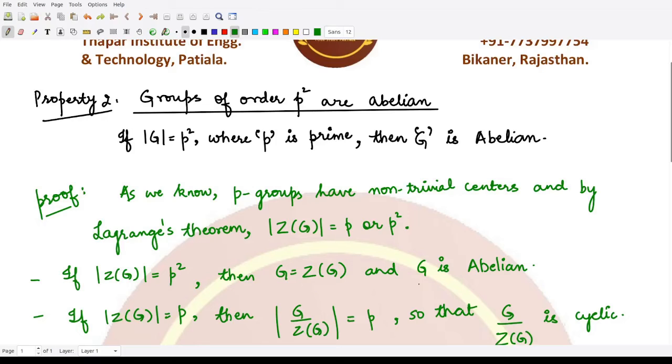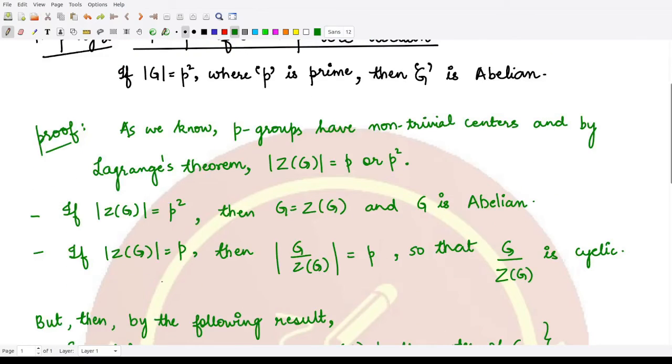In the second case, if we suppose that the order of the center of the group G is p, just the prime to power one, then what would be the order of this quotient group which is formed by dividing G with the center of G? It is also p, correct?